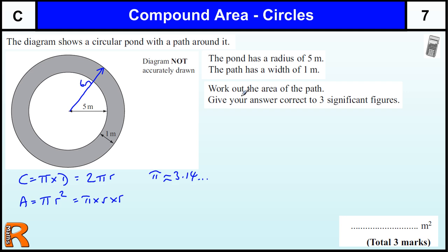So work out the area of the path. This is essentially a compound area where you have got the big circle, take away the small circle. So if we work out the big circle's area...